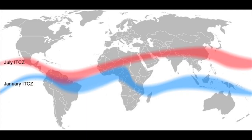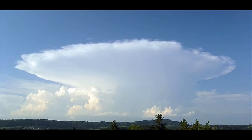Most tropical cyclones originate from the Intertropical Convergence Zone, or ITCZ, which is an area of strong surface convergence. Since the Earth tilts, the location of the ITCZ varies from time to time during the year, but the ITCZ is generally located near the equator. Since the pressure at the equator is lower than its surroundings, air from both the southern and northern hemisphere converges into it. The converging air then rises, condenses, and forms very strong thunderstorms. So the ITCZ is generally a belt of thunderstorm activity near the equator.